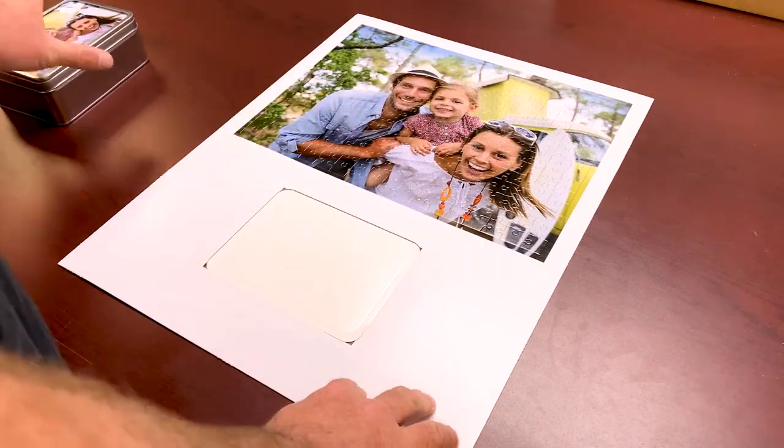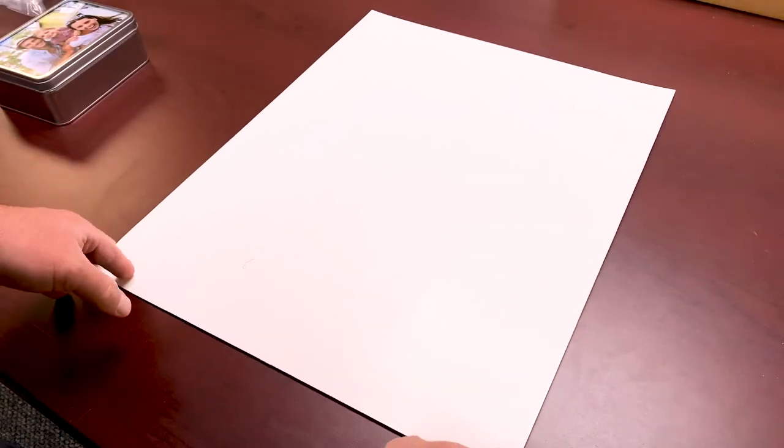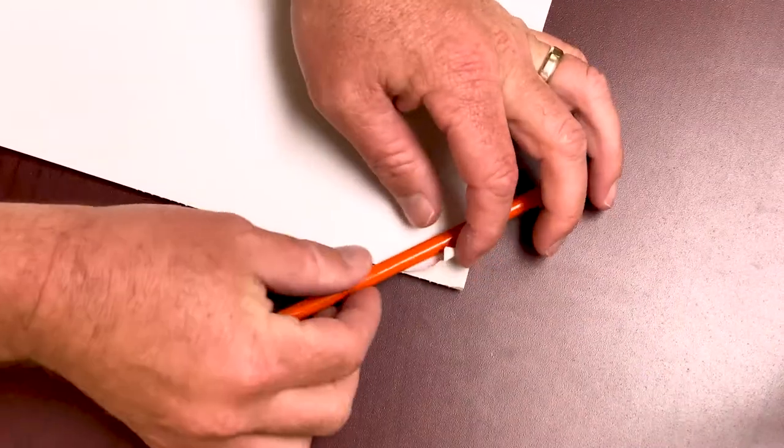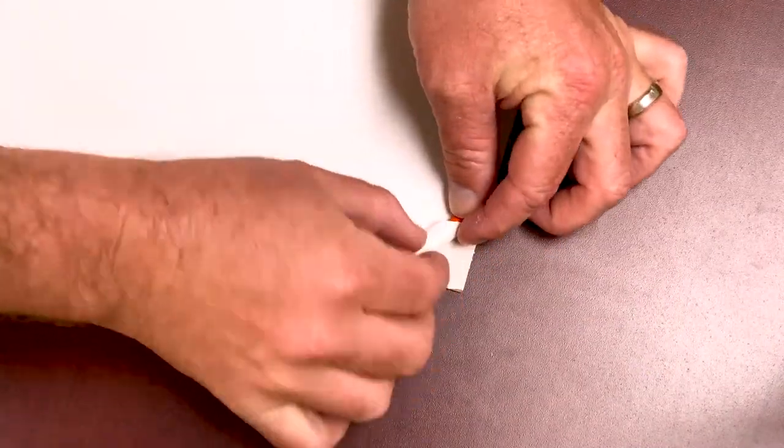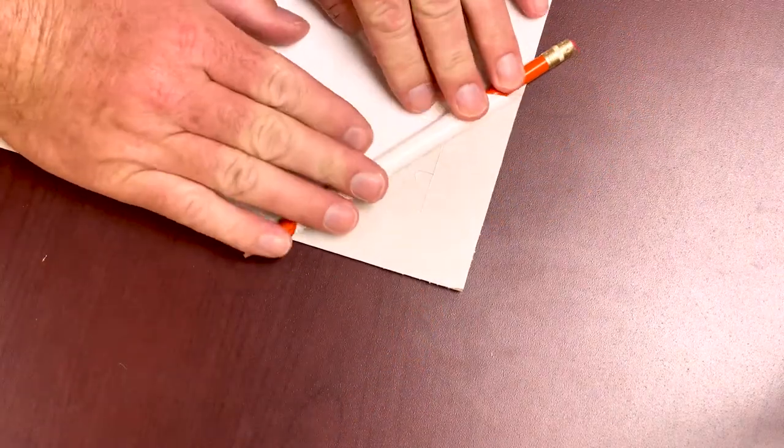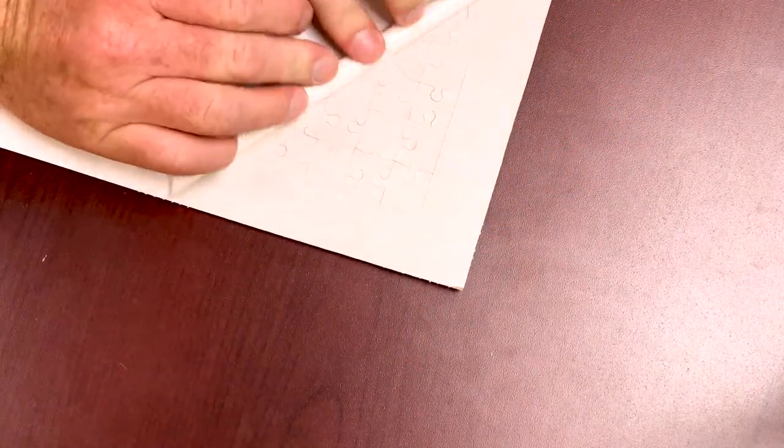Place the puzzle board printed side down on a clean, flat surface. Peel the sticker paper from the back of the board. Use a pen or pencil to help roll the sticker paper back onto itself. Continue rolling the sticker paper backwards until it's fully removed from the puzzle board.